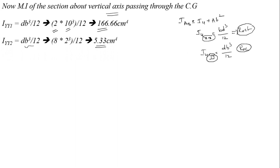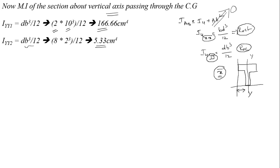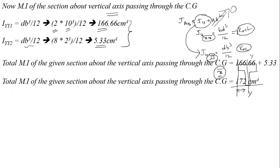Because the T-section is symmetric about the YY axis, X-bar equals the distance between the Y axis and the center of gravity, meaning the AH² term becomes zero. We need only calculate IG. The sum gives the moment of inertia about YY axis = 172 cm⁴.